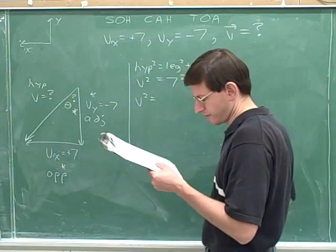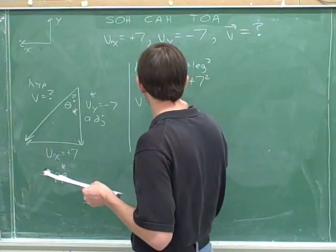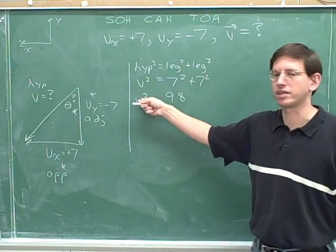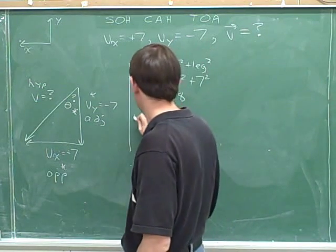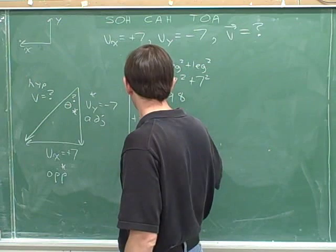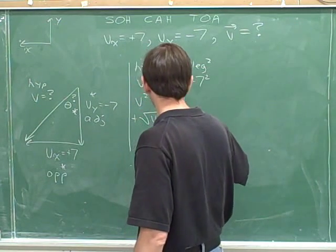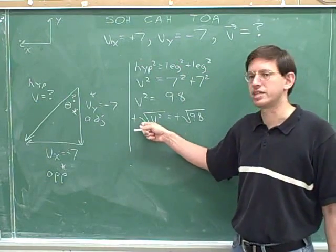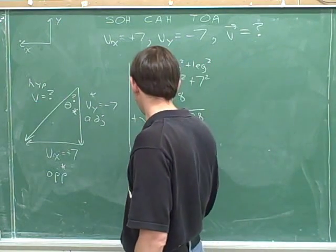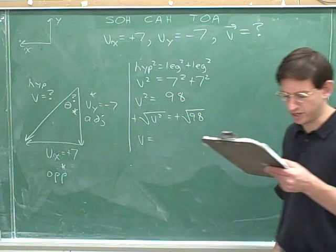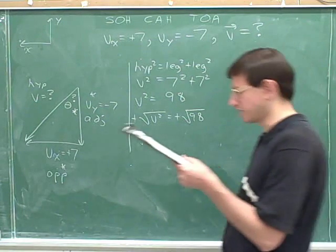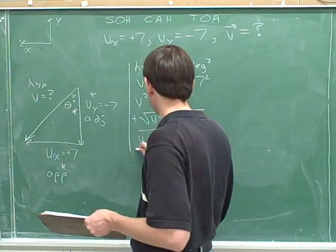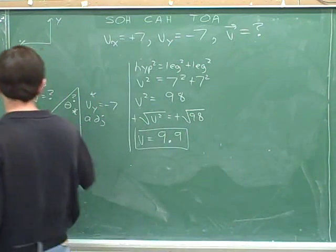7 squared plus 7 squared is 98. To get v by itself, we do the opposite and take the square root of both sides. If you square something and then take the square root, you're left with the original variable. And the square root of 98 on your calculator is 9.9. That's part of the answer. That's the magnitude of the overall vector.